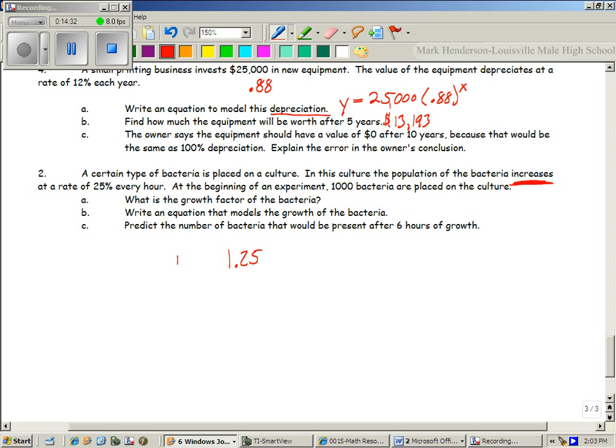So this is 1,000 times 1.25 raised to the X. So the growth factor is 1.25. That's A. This is B. That's the equation. Number of bacteria after six hours is Y equals 1,000 times 1.25 raised to the sixth power.